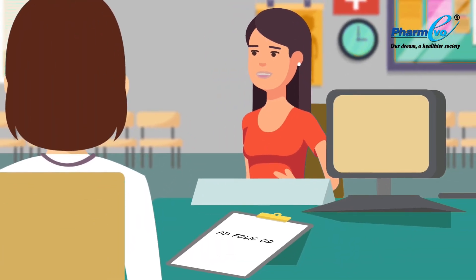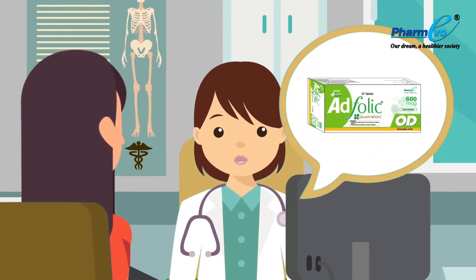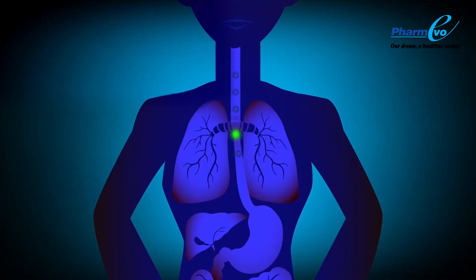Then what is the solution? Take active form of folic acid like adfolic OD, which is available in the right dose, does not require metabolism, and prevents your child from neural tube defects.